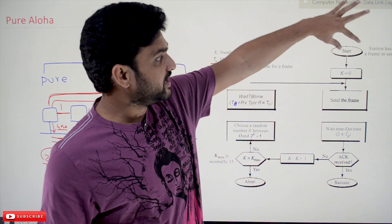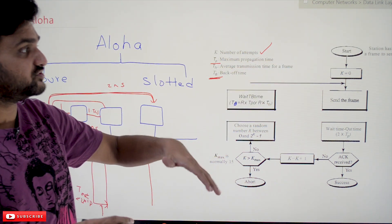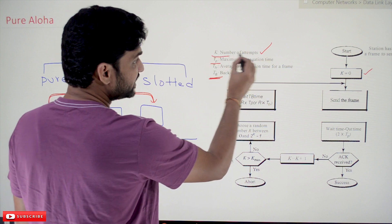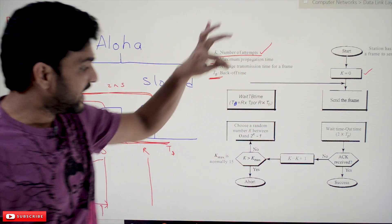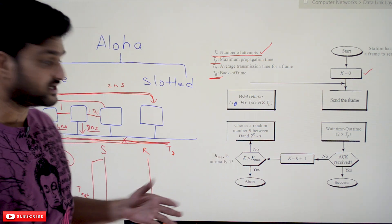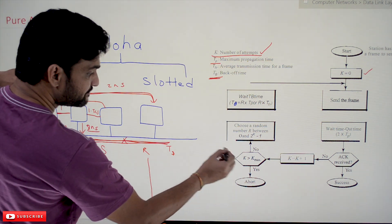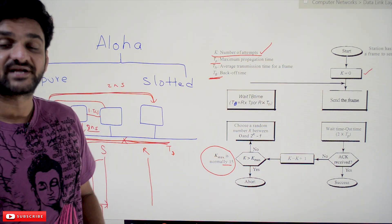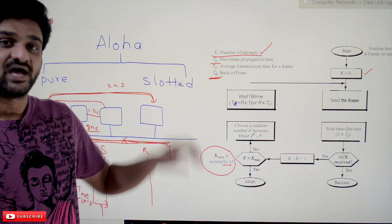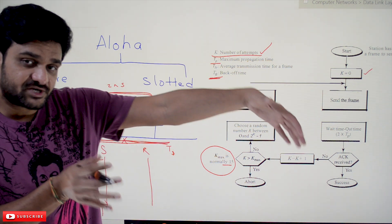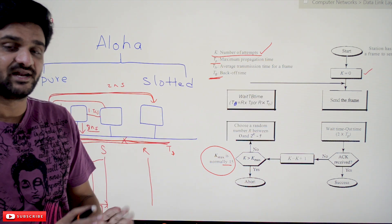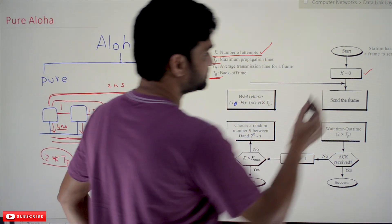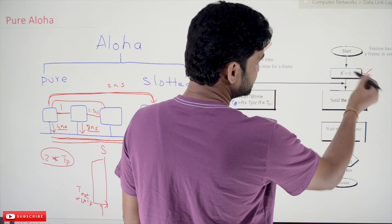Now let's understand how this protocol works. When a station has a frame to send, it will send it. Initially, k starts at 0, where k is the number of attempts made. The maximum number of attempts is normally 15. After 15 attempts, the system will abort the transmission, sit idle for a particular period, and then try again. So initially k equals 0, send the frame, wait for the timeout time (2 × tp), and check for acknowledgement.